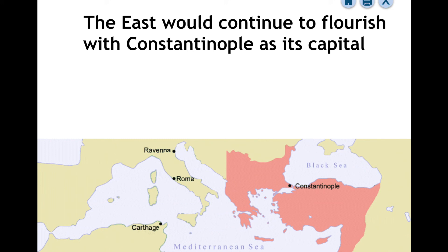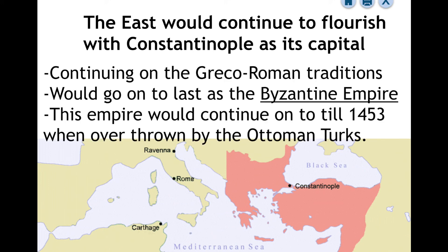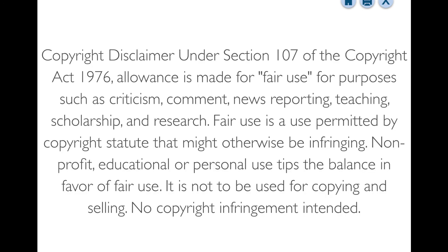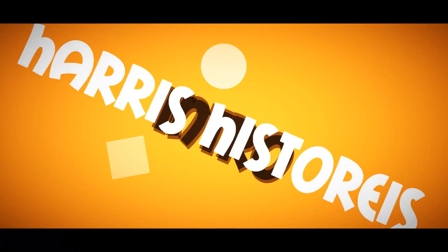Eastern Rome still exists with Constantinople as its capital. Historians disagree on this — some say Eastern Rome is still Rome, while others say it's different because they speak a different language and have a different religion. For the sake of this class, we're going to treat the Byzantine Empire as separate from the Roman Empire, and consider the Roman Empire as falling in 476 AD. We'll look at the Byzantine Empire in more detail at a future date. Have an excellent day. Goodbye.